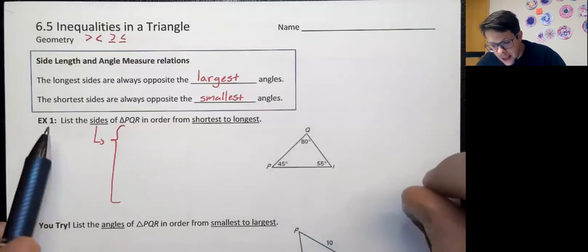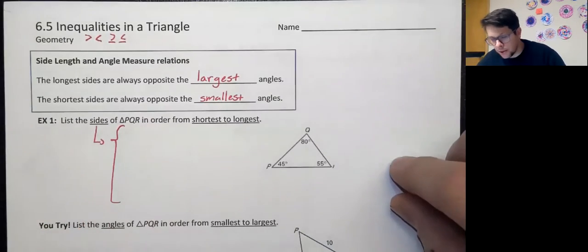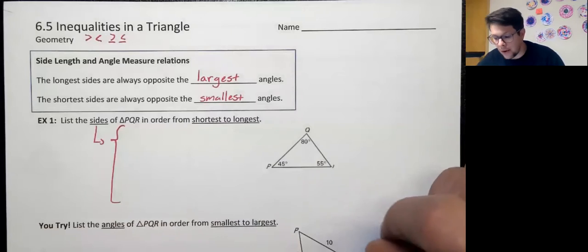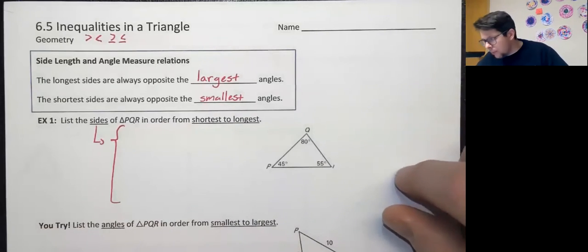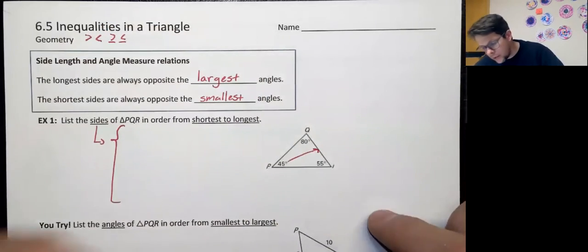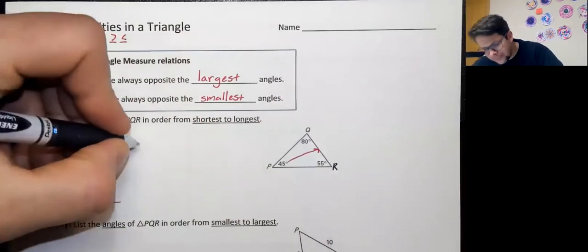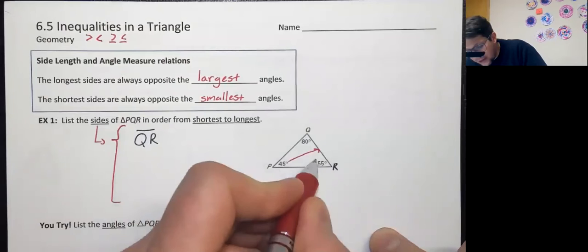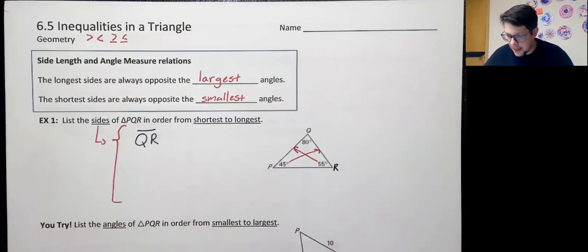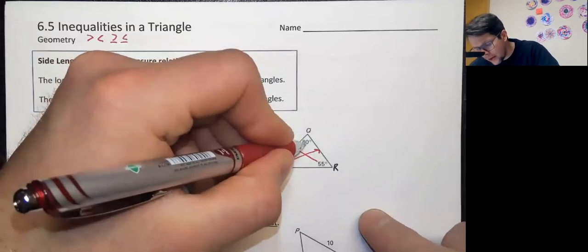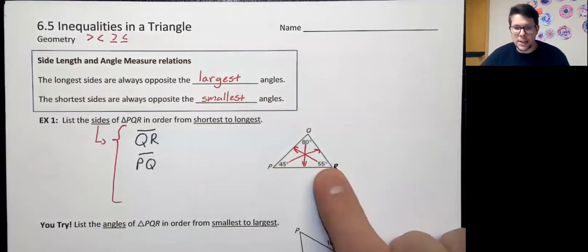In our first example, it says: list the sides of triangle PQR in order from the shortest to the longest. I did not give you any side lengths here — I've asked about sides, but the information provided is actually about angles. If you find a small angle like our 45-degree angle, it is going to be opposite a very short side. So the side on the far right is our shortest side, QR. Then our medium angle of 55 degrees is opposite the medium length side, PQ.